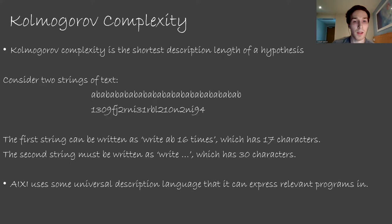That was done in the English language. ICSI is going to use a universal description language to express the relevant programs. There is some universal description language ICSI can use, and we can use Kolmogorov complexity in that context to define complexity in a reasonable way.